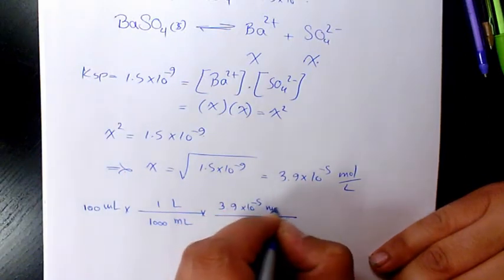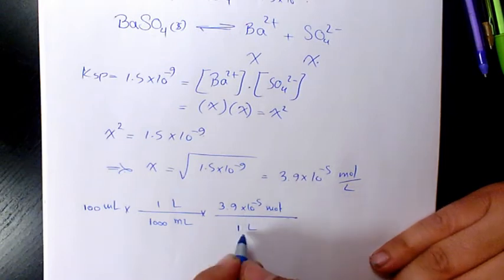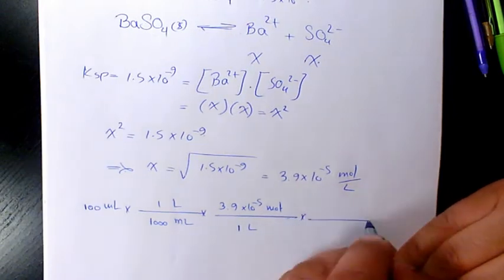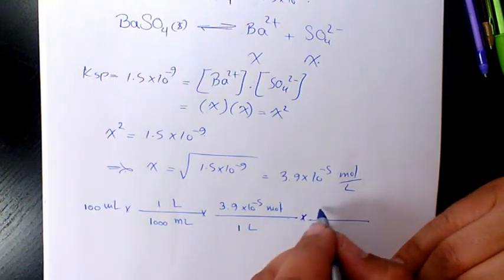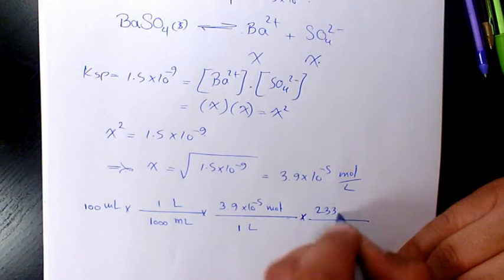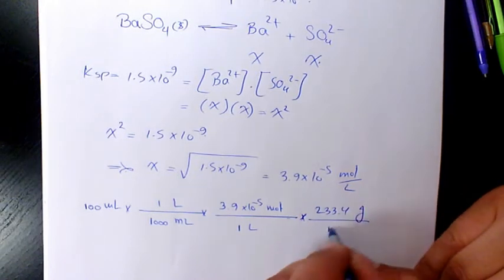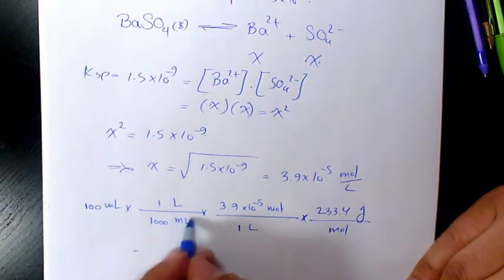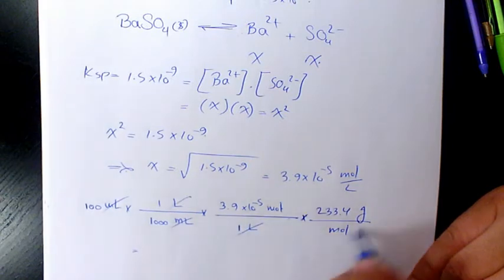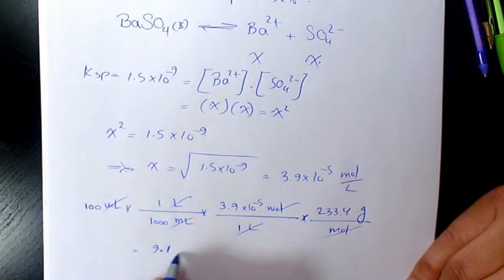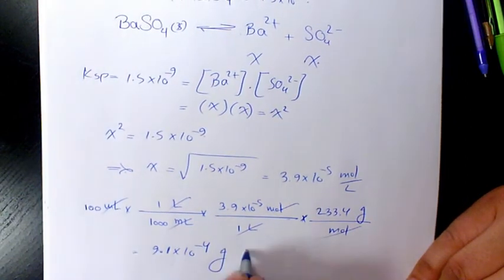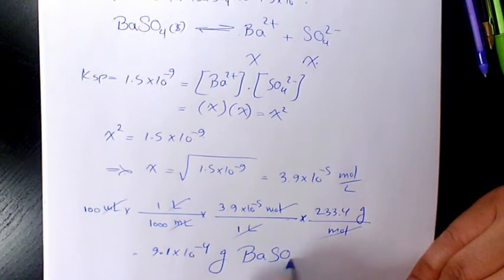Times the molar mass of barium sulfate is 233.4 grams per mole. So these two cancel out, this cancels out, this cancels out, and we're gonna end up having just grams. And the final answer will be 9.1 times 10 to the power of negative 4 gram of barium sulfate.